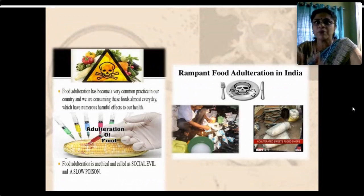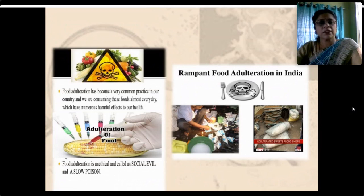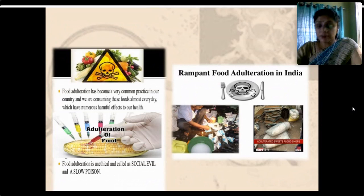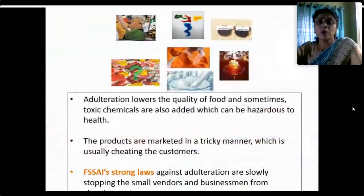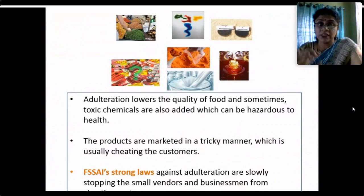What is the situation in India? There is rampant food adulteration in India, and it has become a very common practice in our country. We are consuming these adulterated foods almost every day. Adulteration of food is becoming truly unethical — a social evil, a slow poison — lowering the quality of food and creating health hazards. These products are marketed in a very attractive manner because the motive is to cheat customers.